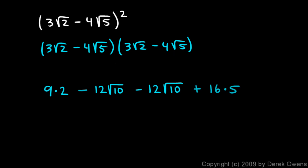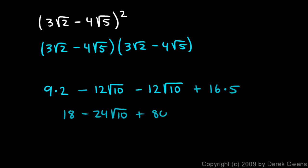These things will combine. 9 times 2 is 18. The two middle terms combine to give minus 24 times the square root of 10. And 16 times 5 is 80. Then 18 and 80 add up to 98. So the answer is 98 minus 24 times the square root of 10. In the next video, we'll talk about conjugates and how multiplying binomials with conjugates can cause some things to simplify that wouldn't otherwise.